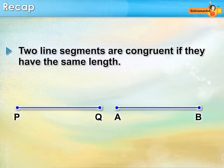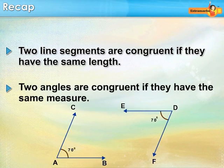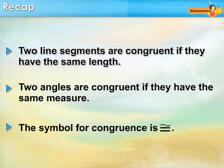Let us summarize what we have learned so far. Two line segments are congruent if they have the same length. Two angles are congruent if they have the same measure. The symbol given here denotes congruence.